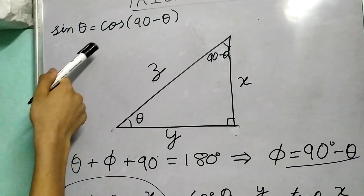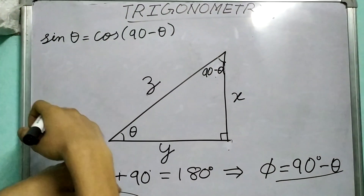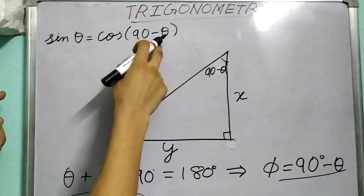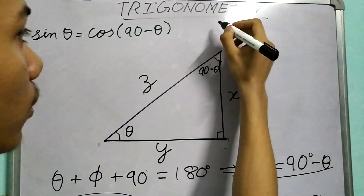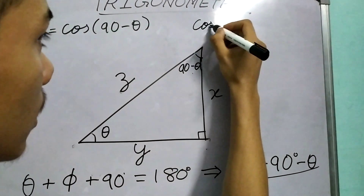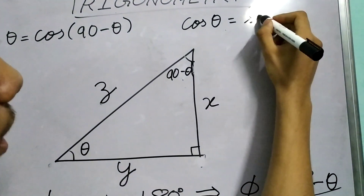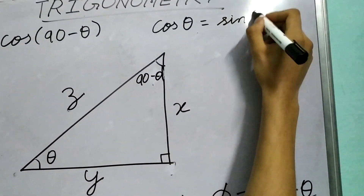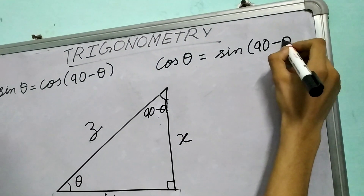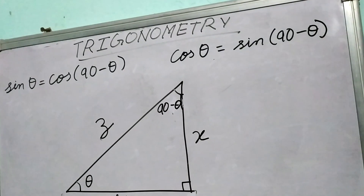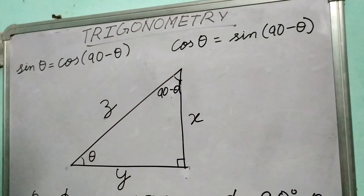Now I need you to prove the other direction: cos theta equals sin of (90 minus theta). This follows the same logic.